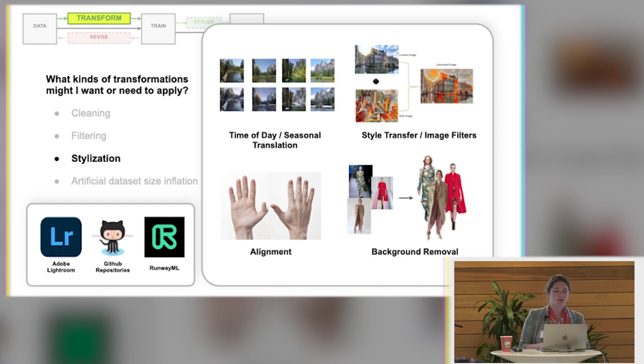Also in terms of transformation, stylization can be really useful, both for editing and also for data set size inflation. So there are models out there that can do time of day or seasonal translation. So if you only want landscape images that are in the wintertime, there are actually AI models that can convert your summer images to winter images. Or that can convert your daytime images to sunsets or your nighttime images to daytime. So that can be another way of transforming your data to kind of steer your model in a different direction without even beginning the training process.